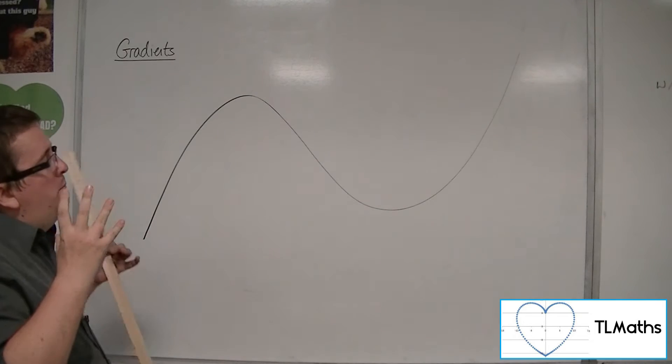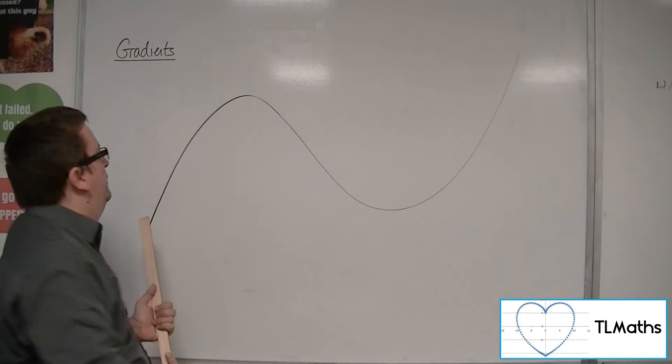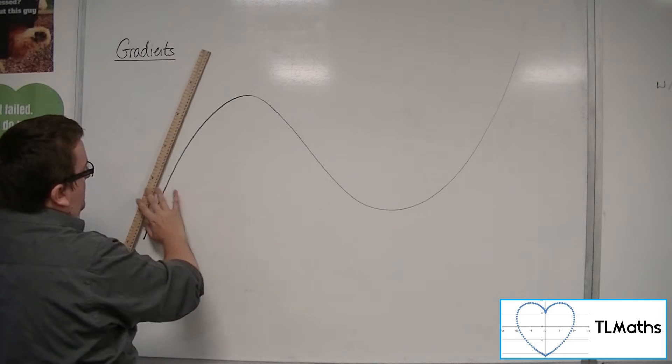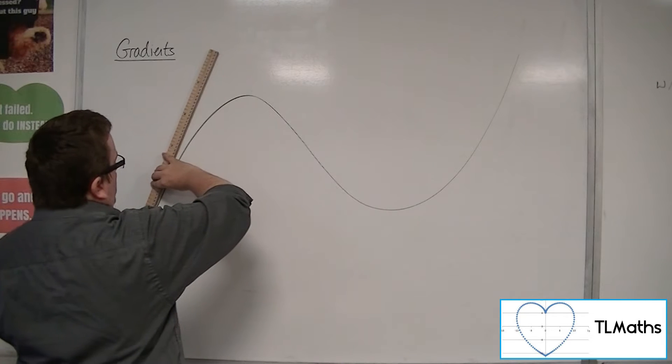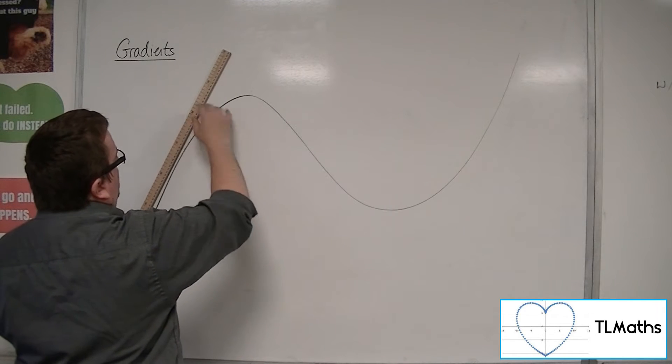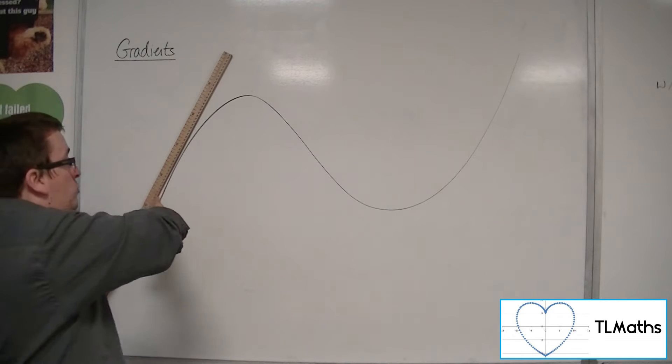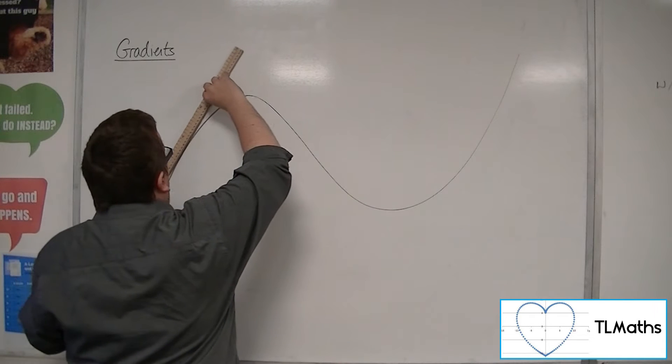Well, as I'm moving along the curve, so at this point, for example, over here, I would say that the tangent lines that I draw will have positive gradient. And so what I can say is that the curve is increasing at this point.